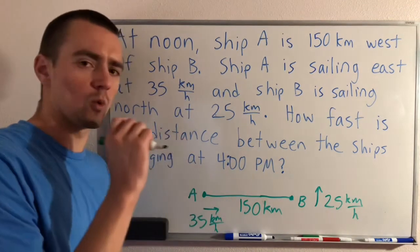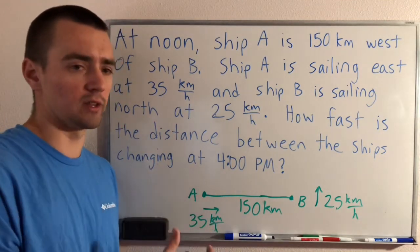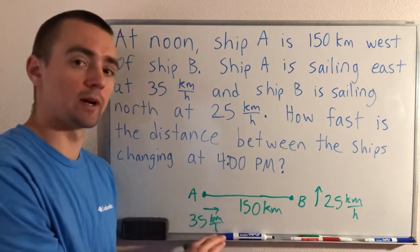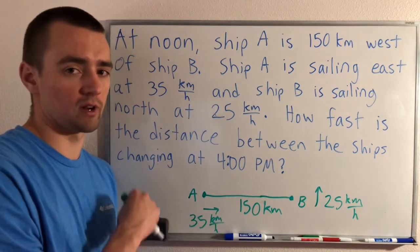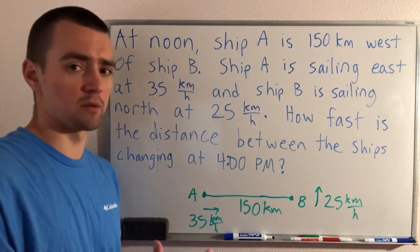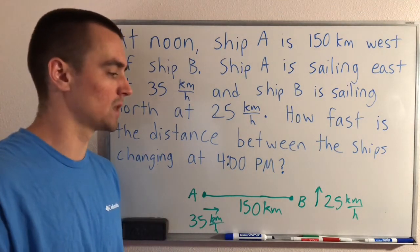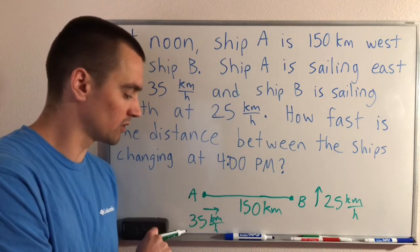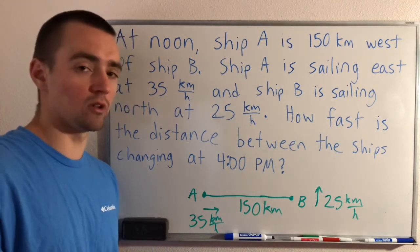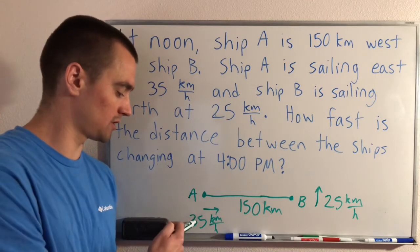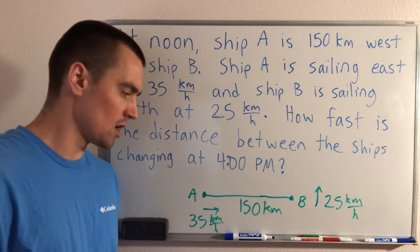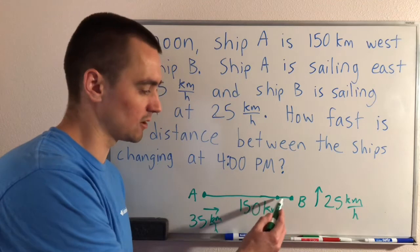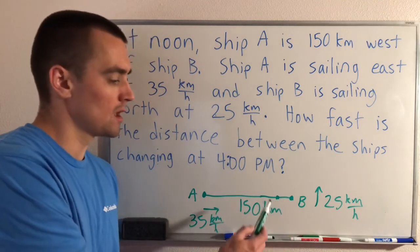What we want to think about is where these ships would be at four o'clock PM. If ship A is moving 35 kilometers per hour for four hours, it would travel a total of 140 kilometers — 35 times four. So at four o'clock PM, ship A is going to be somewhere over here, only 10 kilometers away from where ship B started.